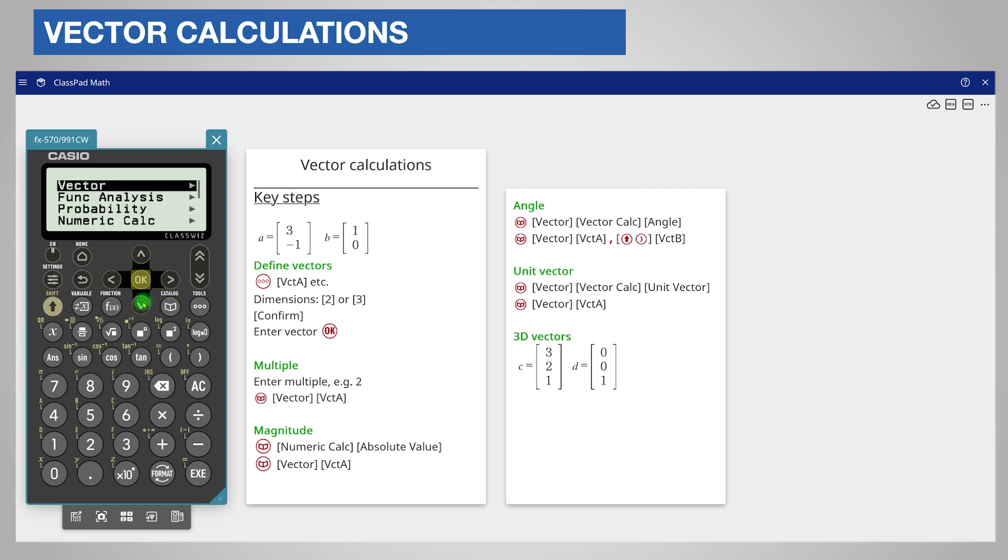Now enter your vector by pressing the catalog key, choosing vector and vector A. Complete the calculation by closing the bracket and pressing the execute key.